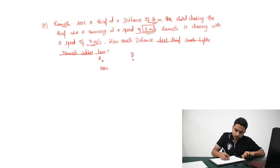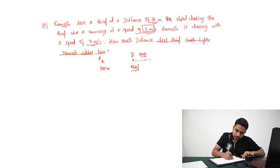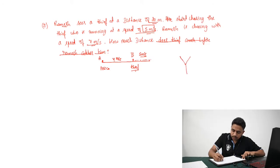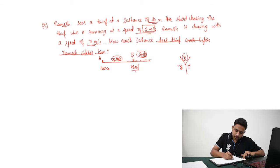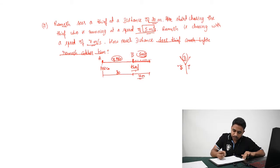Let point A be Ramesh's position and point B be the thief's position. When Ramesh sees the thief at 80 meters, he starts running. Thief's speed is 5 m/s and police speed is 7 m/s. Using the Y of DST formula — speed is different, distance is also varying, but the time is the same. Let the distance covered by the thief be x meters.